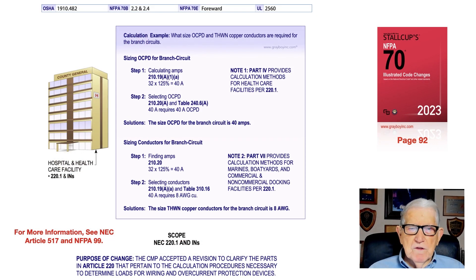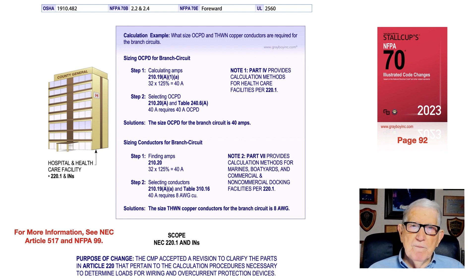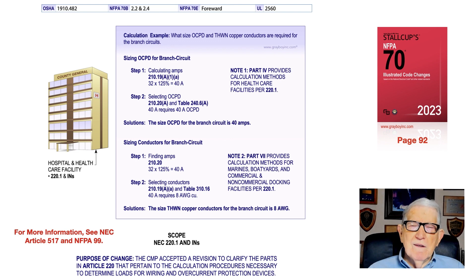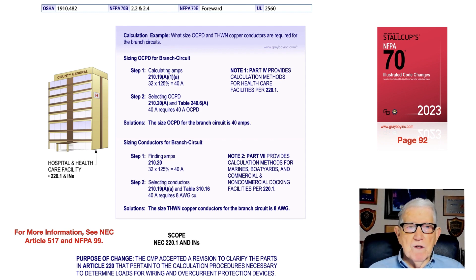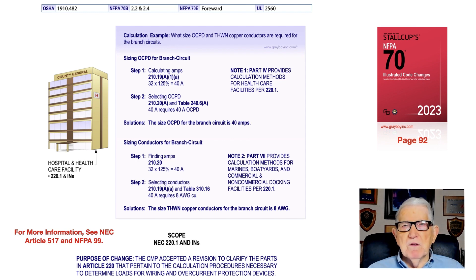This illustration deals with the scope in accordance with NEC 220.1 and informational notes. The purpose of the change is to include the calculation procedures for certain facilities, based upon sizing the overcurrent device and conductors for a branch circuit. We're on page 92 of the NEC, and in the illustration we have a hospital and a health care facility.